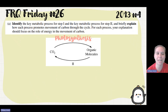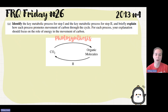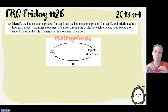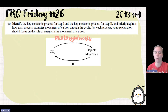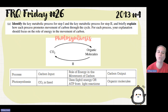We have to briefly explain how each process promotes movement of carbon through the cycle, focusing on the role of energy. In photosynthesis, the carbon dioxide is going to use the energy from solar radiation. In the light reactions, photosystems capture light energy and store it as ATP and high-energy electrons in NADPH. The ATP and NADPH go to the Calvin cycle, where carbon dioxide gets fixed, synthesizing G3P and other organic molecules.